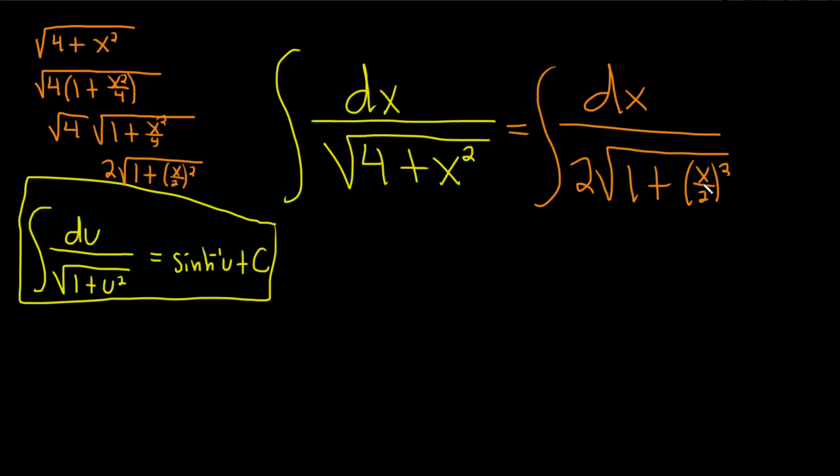Our u is going to be this x over 2. So u is equal to x over 2. So du is equal to, well, you can think of this as 1 half x, right? So when you take the derivative of x, you just get 1, so this is just 1 half dx.